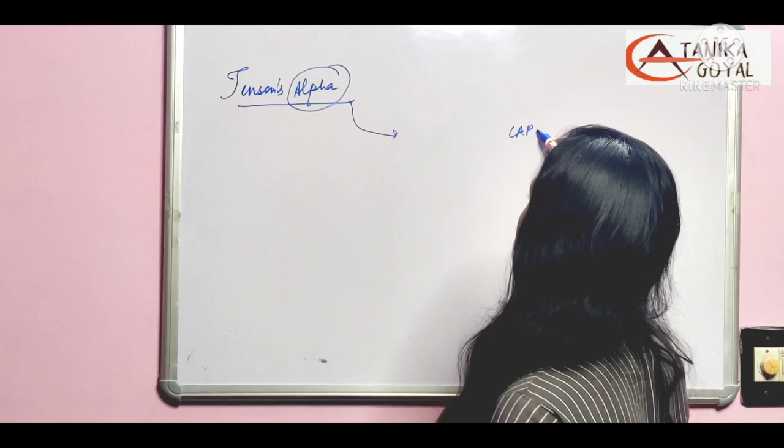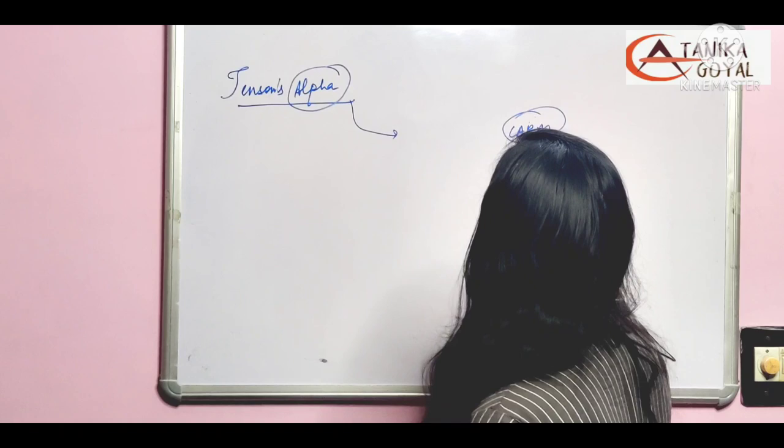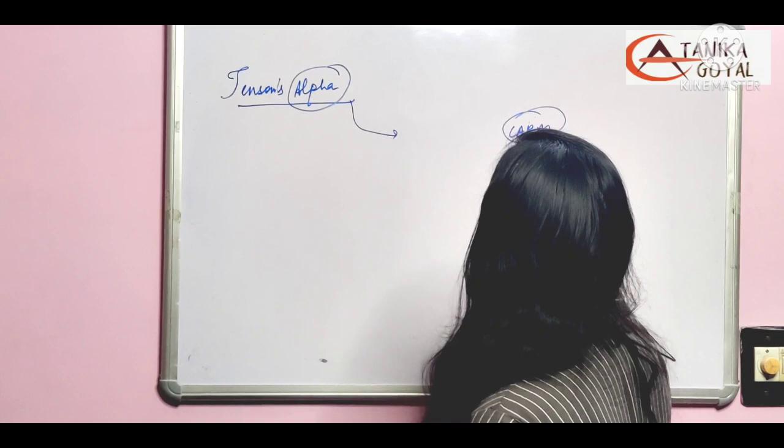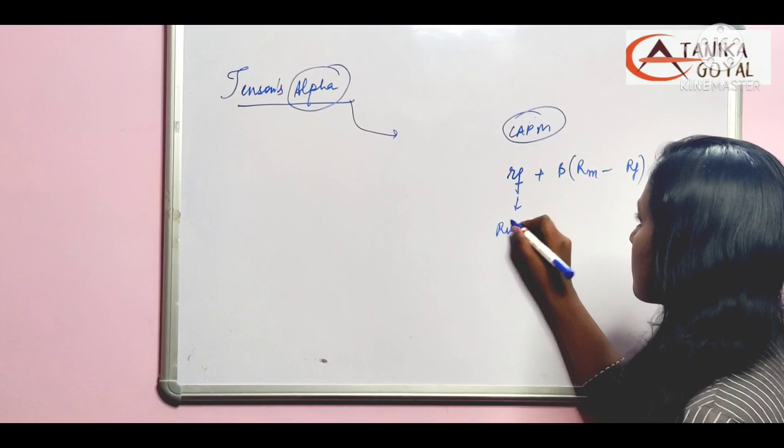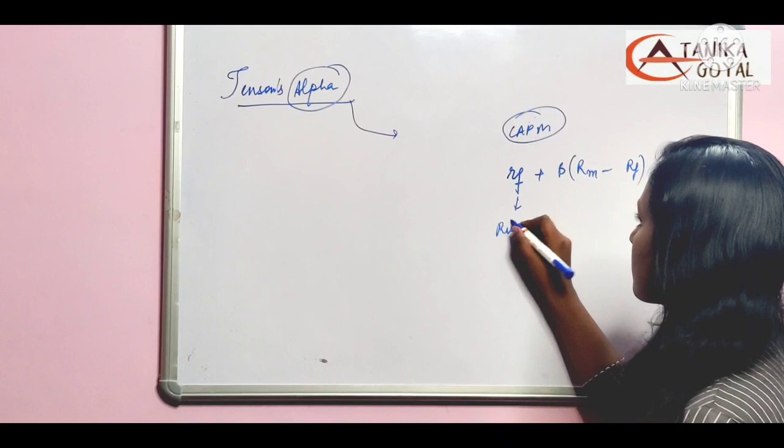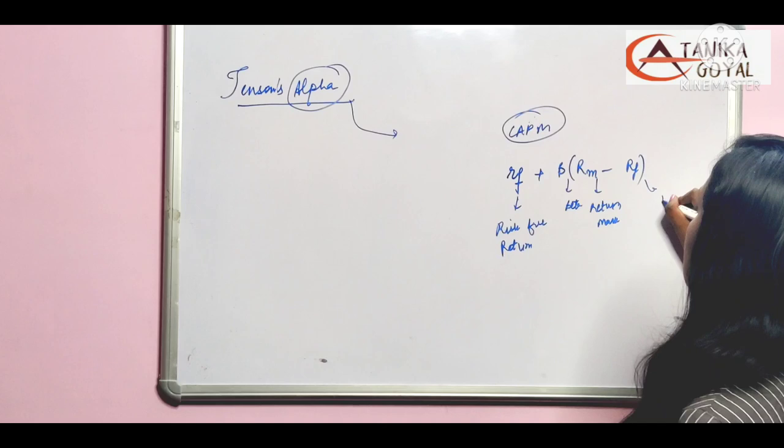We have learned about CAPM method. In CAPM method, how does required return come out? Required return comes out as RF plus beta times RM minus RF, which is risk-free return. This is my beta, this is my return of market, and this is my risk-free return.